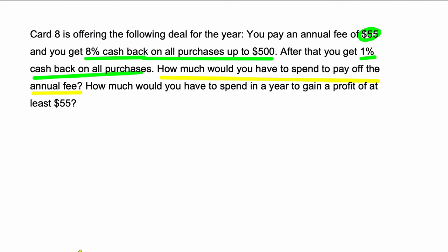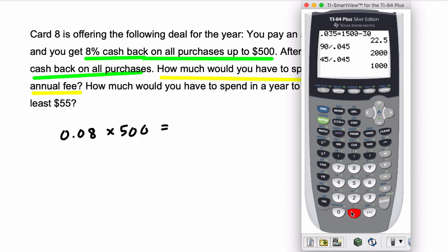So in order to pay off the annual fee, you have to get $55 of cash back. Now, the first thing I'm going to test is what is 8% of $500? How much is that? Because that's our bigger cash back amount. It's 0.08 times $500. This is the first $500 we spend.